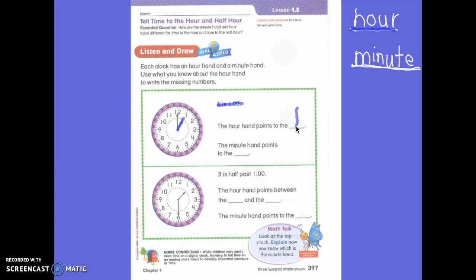The minute hand, which one is the minute hand? The big one. The minute hand points to the twelve. So when it is one o'clock, this is what it looks like with both hands. So the minute hand is going to say o'clock when it points to the twelve.